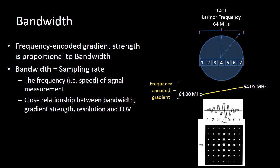When you apply a frequency encoded gradient, you will have some protons that will be spinning at 64 megahertz and other protons that will spin at 64.5 megahertz.